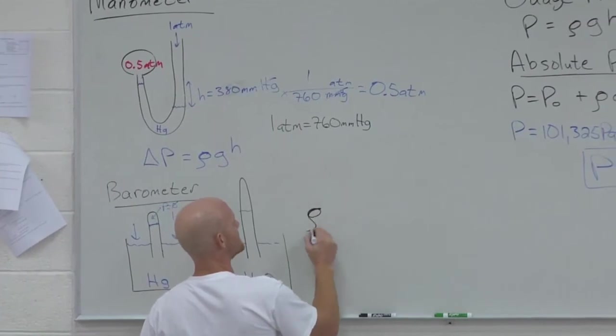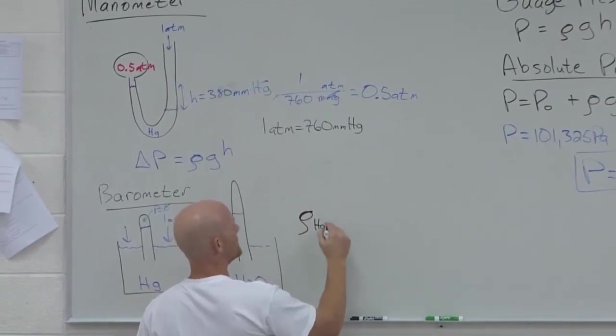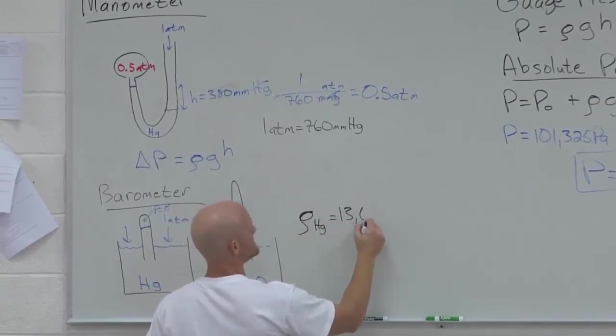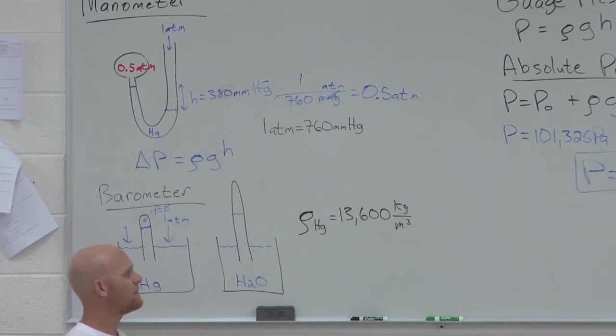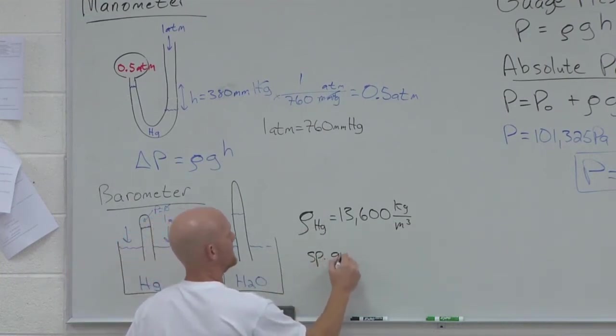However, if I tell you that the density of mercury is 13,600 kilograms per meter cubed, how many, what would be the specific gravity, let me get that one, of mercury then?